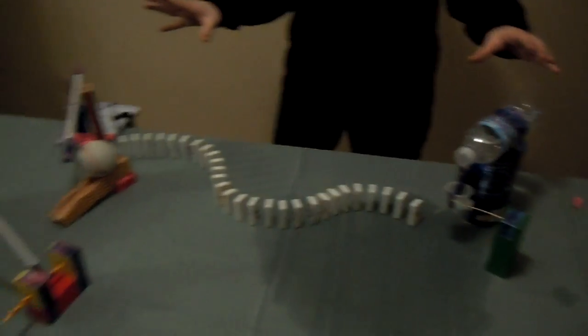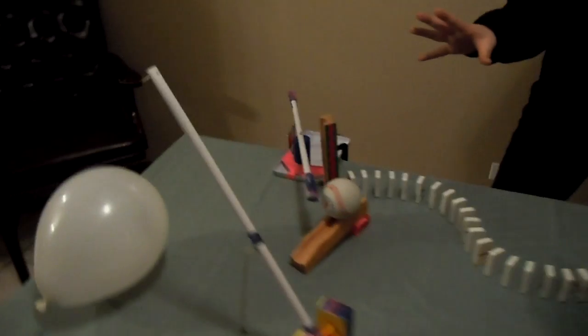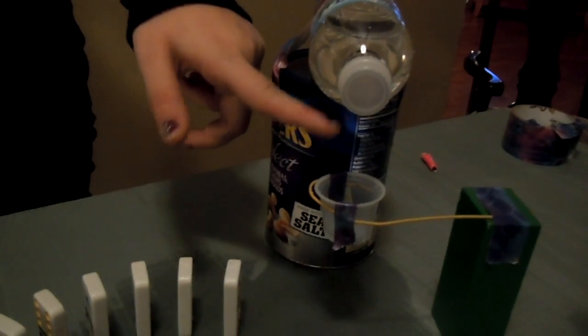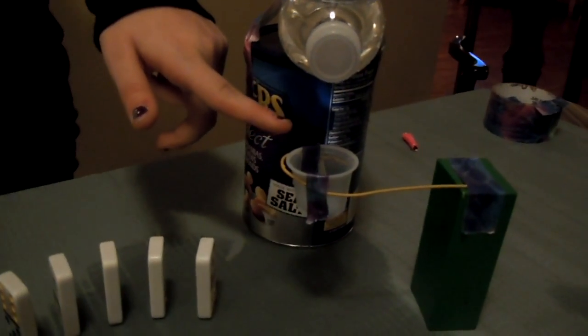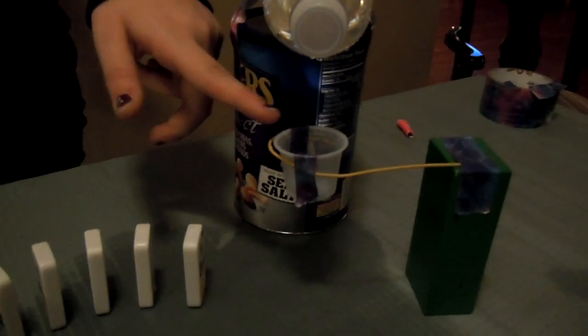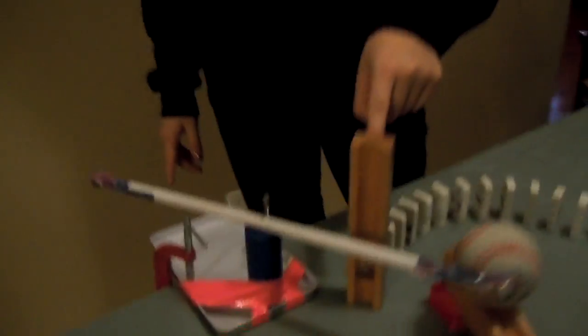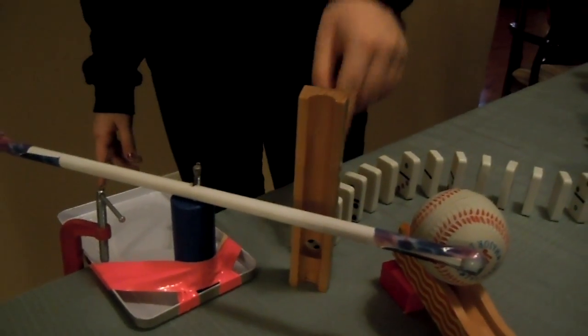It's a Rube Goldberg machine, and basically what's going to happen is when I push down on this, it is going to pour water from a little hole into this cup which is going to fall because of the weight and trigger the domino chain reaction so that this little stick here falls.